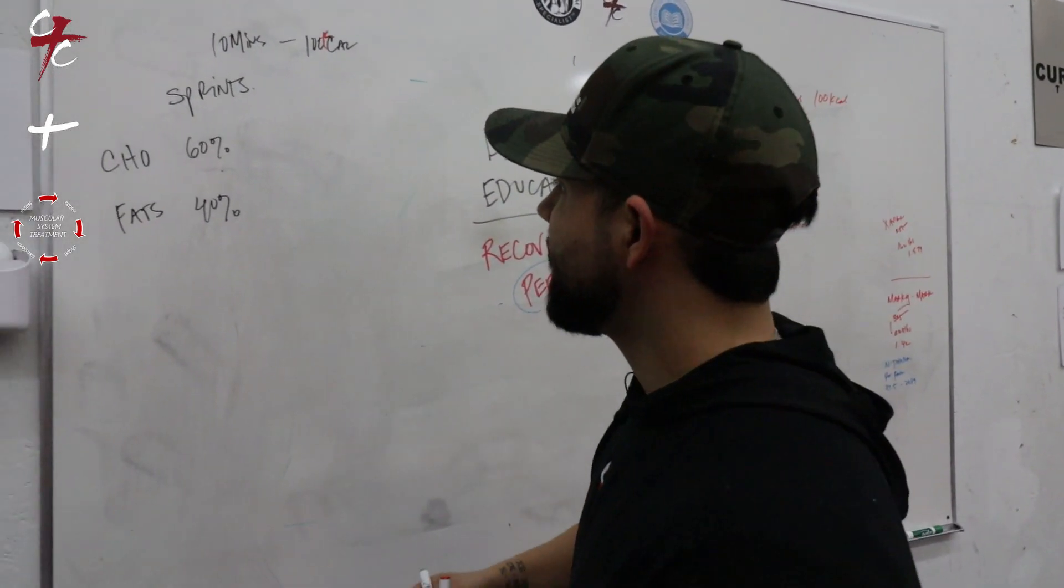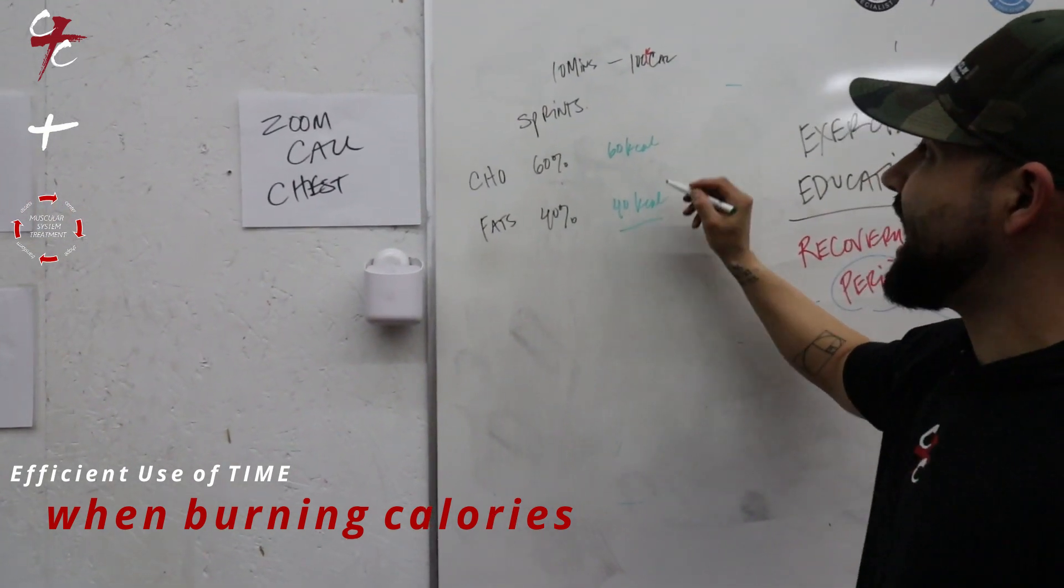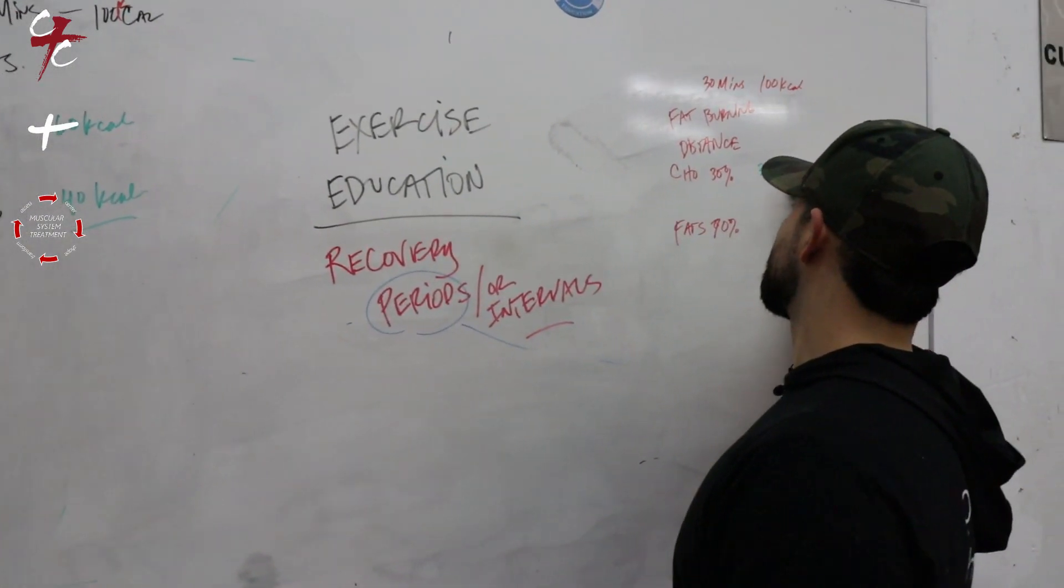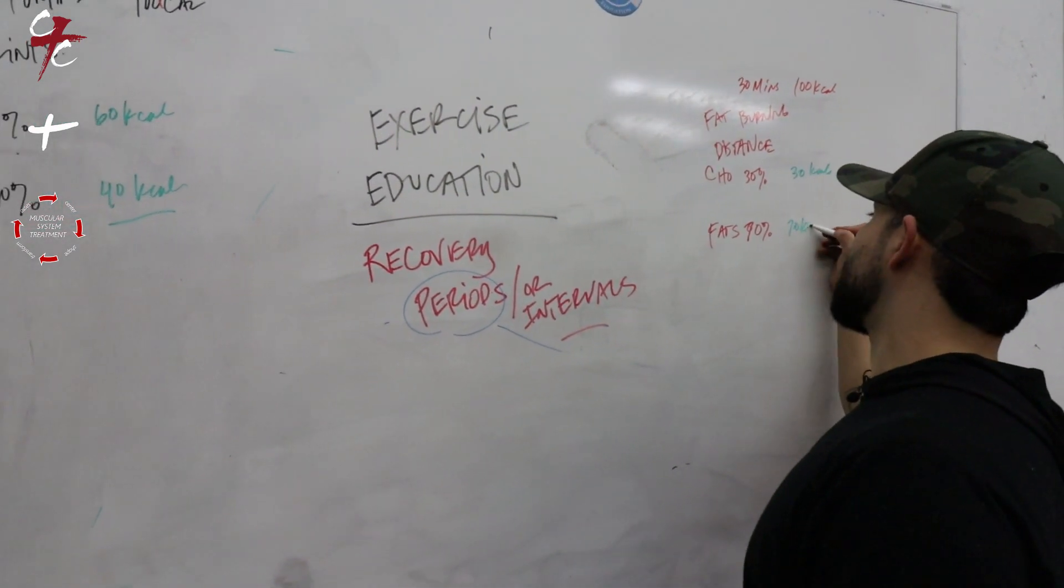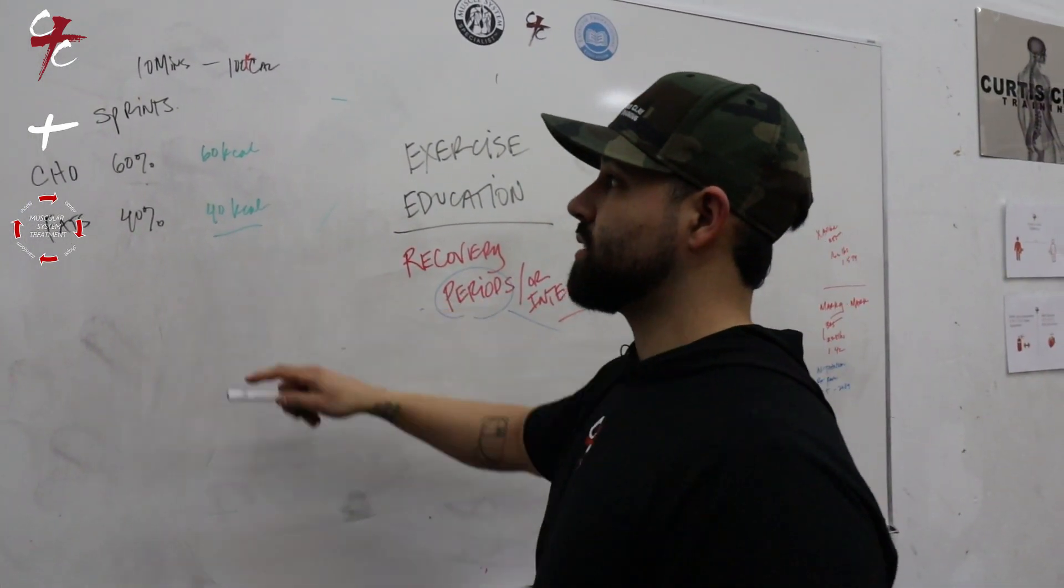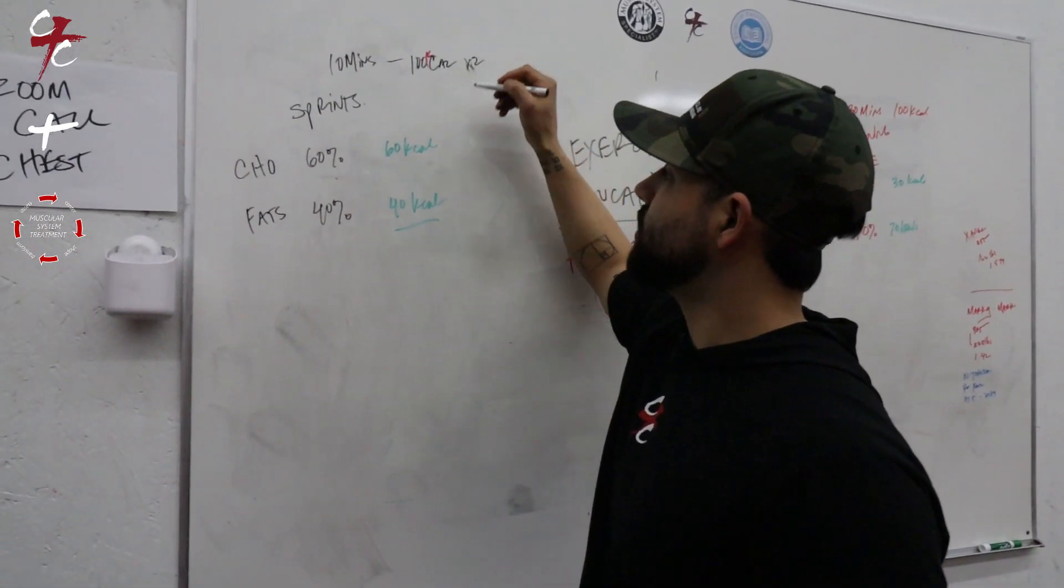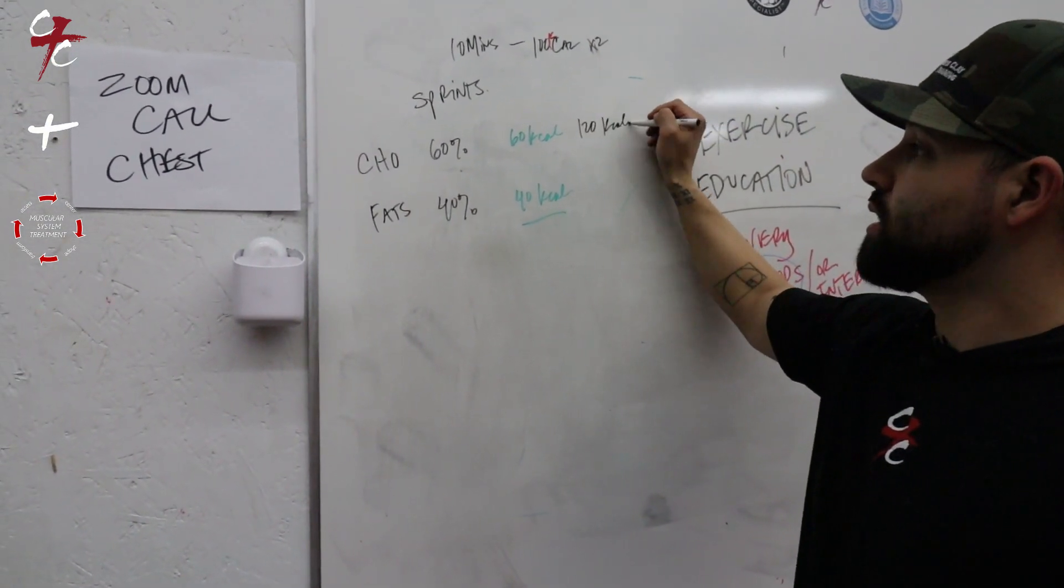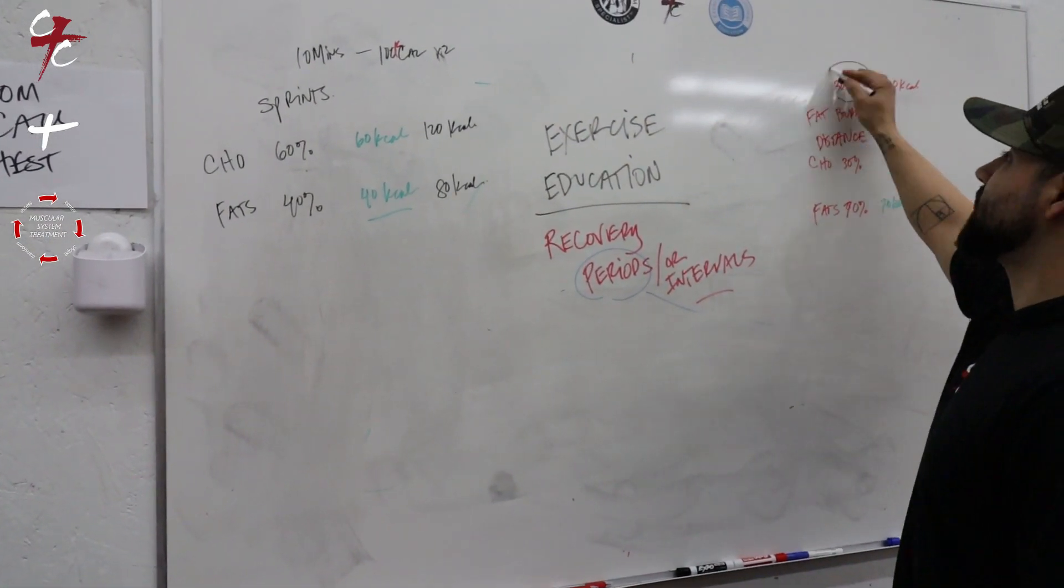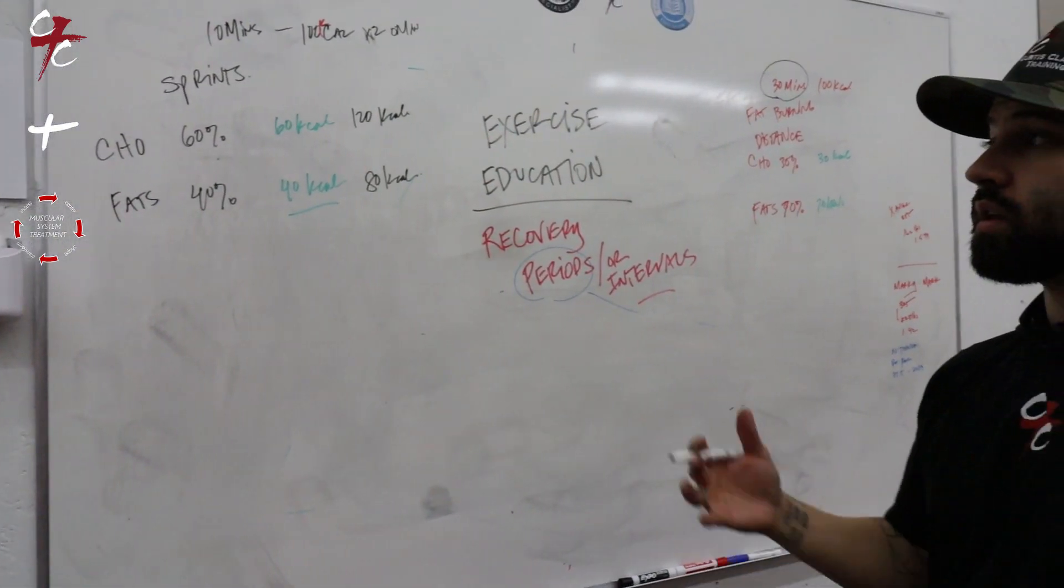With sprints I'm burning sixty kilocalories in carbs and forty kilocalories in fat in ten minutes. If I do distance running, I'm burning thirty calories of carbs and seventy calories of fats, and you might think oh I burn more fat doing distance running. But say you double your sprint time, now you've got one hundred twenty kilocalories of carbs and eighty kilocalories of fat, but you're still under time. You're not doing thirty minutes, you're doing twenty minutes, and you're burning more fat than the distance runner.